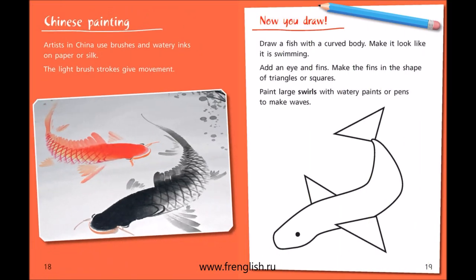Chinese Painting. Artists in China use brushes and watery inks on paper or silk. The light brushstrokes give movement. Now you draw: draw a fish with a curved body and make it look like it is swimming. Add an eye and fins — make the fins in the shape of triangles or squares. Paint large swirls with watery paints or pens to make waves.